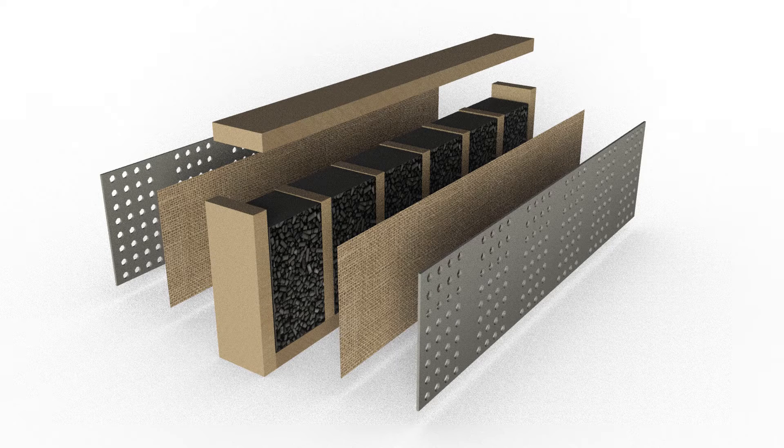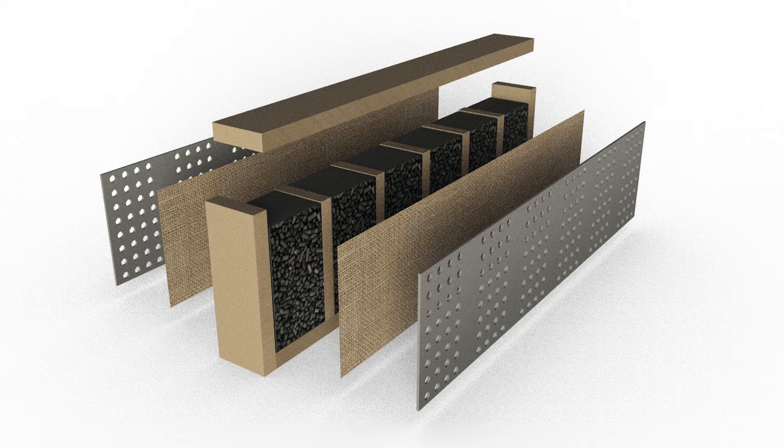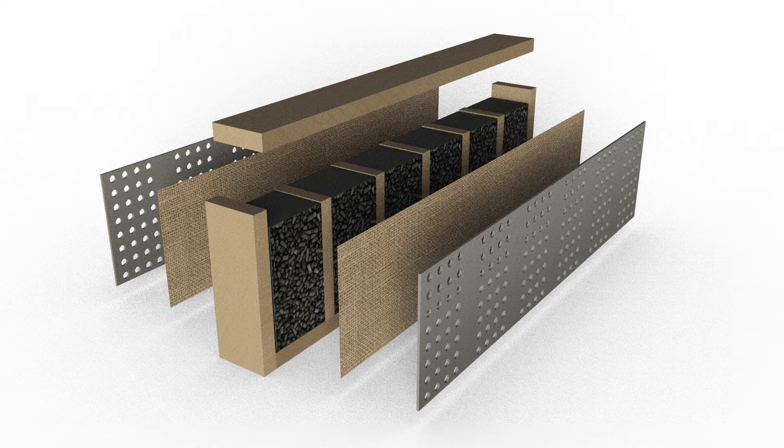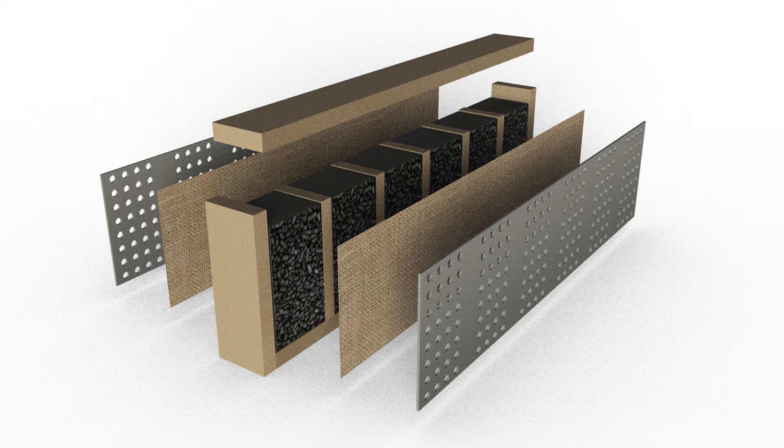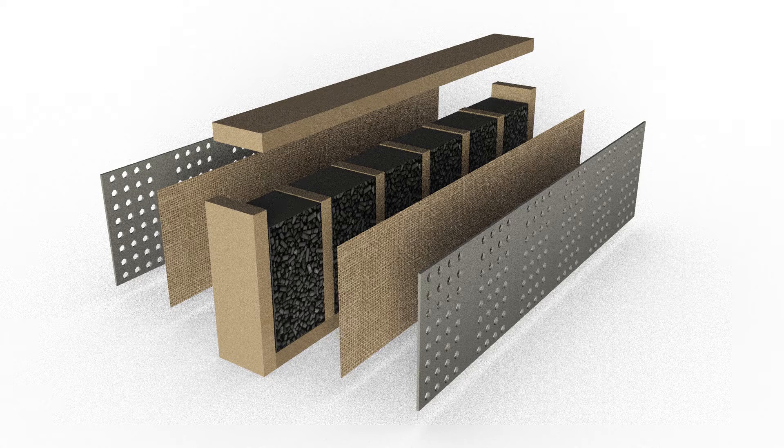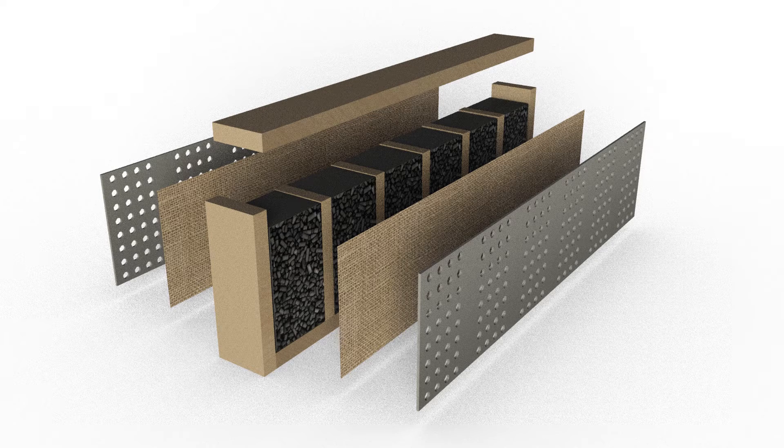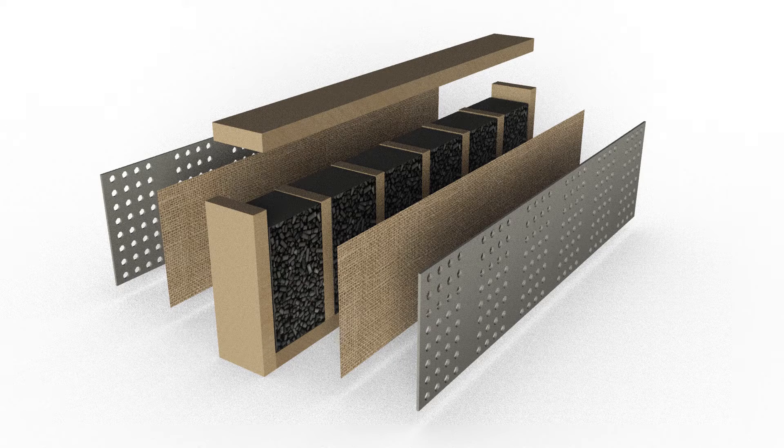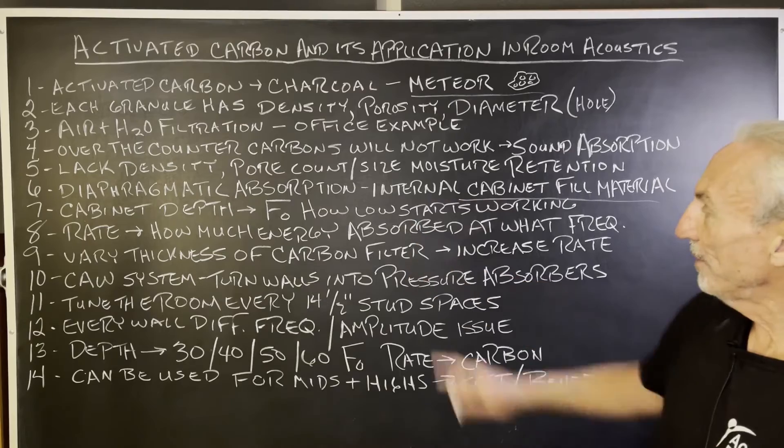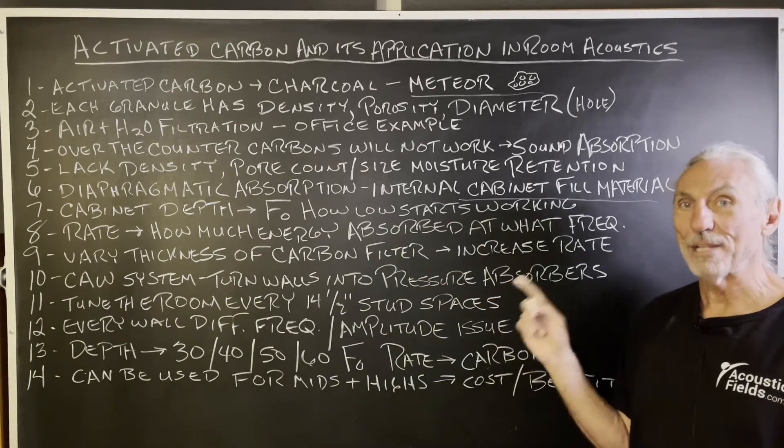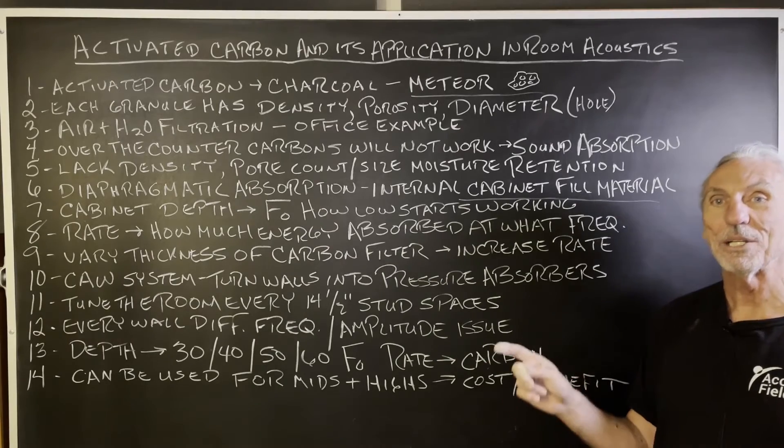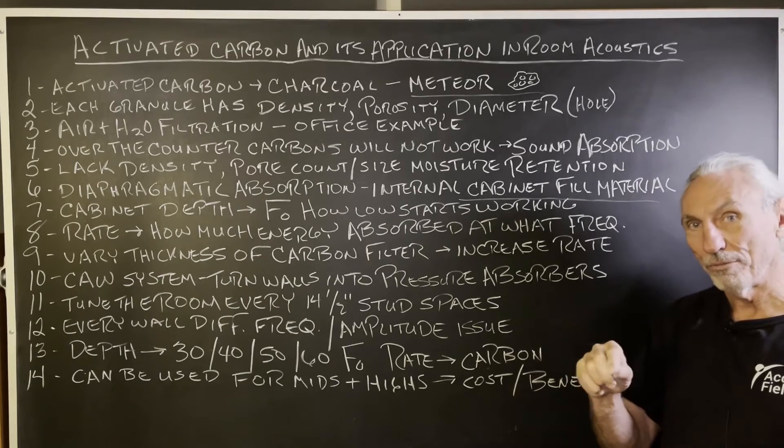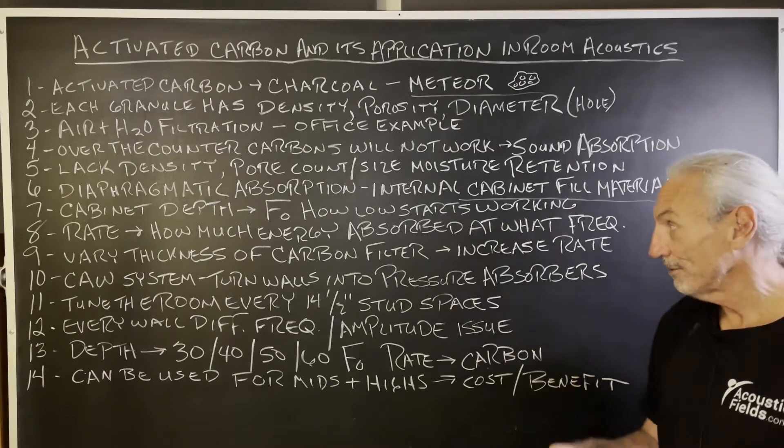We have the perforated pegboard on the outside, which allows for air flow through it. If you look at this design, it's a perforated absorber. So all of our carbon technology is a perforated absorber with carbon inside a diaphragmatic absorber. Never been done before. That's why we get the tremendous rates and levels of absorption that we do. The depth of the cabinet determines how low it will be and the rate. That's where the activated carbon comes in because it controls how much energy we absorb from that lower frequency that the cabinet's designed to begin at.